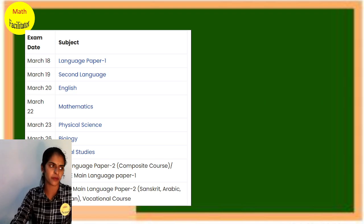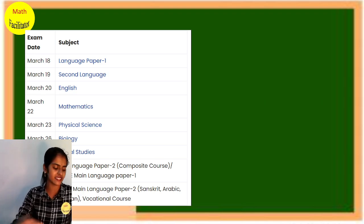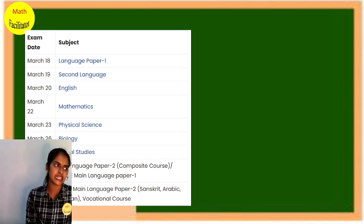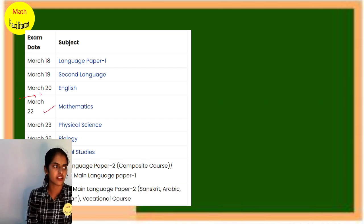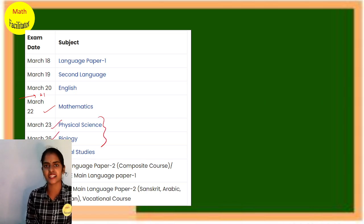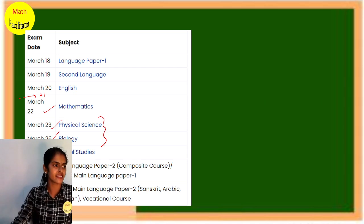Then March 19th is Second Language, March 20th English, and March 22nd Math. March 21st is a holiday. Then March 23rd Physics and Biology—they are conducting separately—and March 27th Social. The exam schedule is clear.